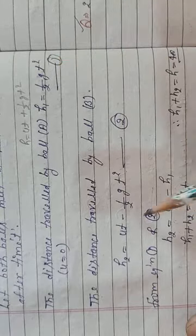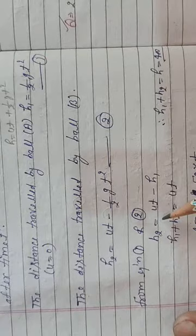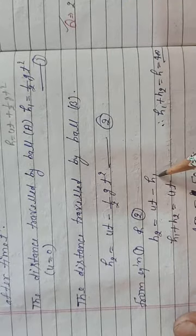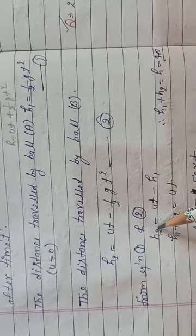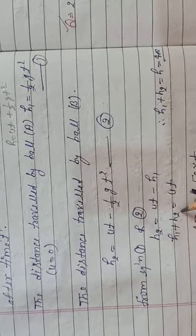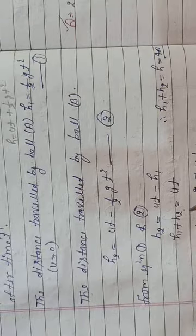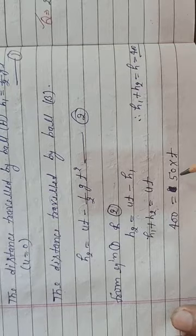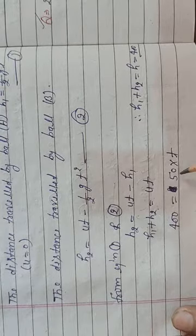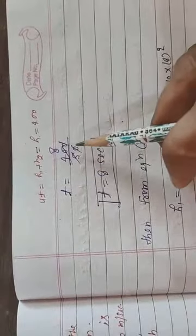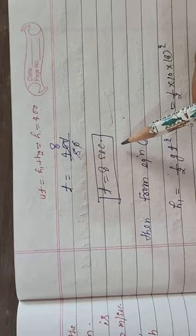From equation 1 and 2 we get: h2 = u₂t − h1. Bringing h1 to the left side: h1 + h2 = u₂t. The total height given in the question is 400 meters. So 400 = 50 × t, which gives t = 400/50 = 8 seconds. Both balls will meet at point P after 8 seconds.